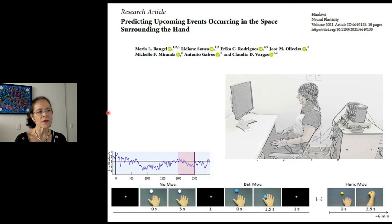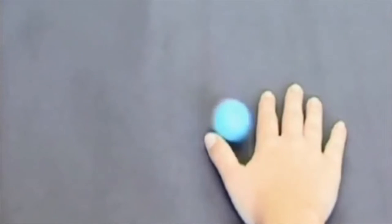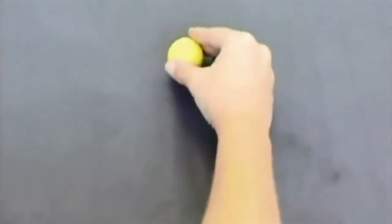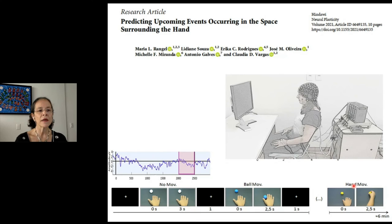In a new version of this experiment, participants were invited to watch videos of three different conditions: no movement condition, a ball movement condition where a ball would go towards the hand, and a hand movement condition where the hand would go towards the ball. Here again, videos depicting left and right-hand movements were presented to a participant in a randomized manner.